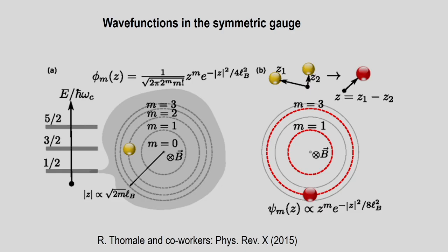Let me go back to the wave function in the symmetric gauge. There is a z to the power m factor and a Gaussian which is mod z squared divided by 4l_B squared, where l_B is the magnetic length. This is the unnormalized wave function. The picture shows Landau levels at (1/2)ℏω_c, (3/2)ℏω_c, (5/2)ℏω_c, and so on, with circular Landau levels corresponding to m = 0, 1, 2, 3.